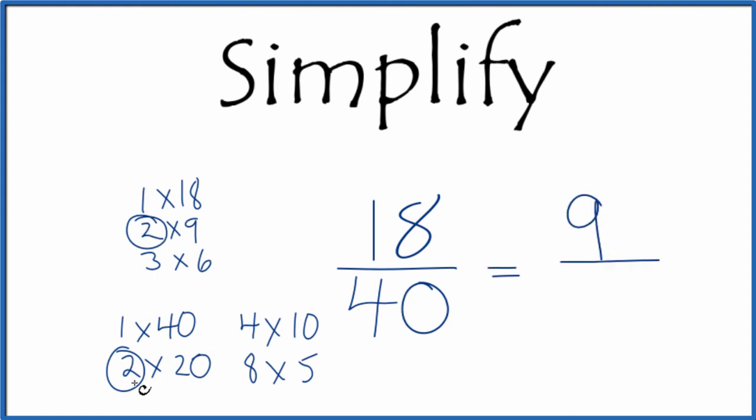And 40 divided by 2 equals 20. So we end up with 9 twentieths, and we can't simplify this any further. We've simplified 18 fortieths down to 9 twentieths. These are equivalent fractions. If you divide 18 by 40 and 9 by 20, you'll get the same answer. It's just that we've reduced 18 fortieths down to 9 twentieths. This is Dr. B, and thanks for watching.